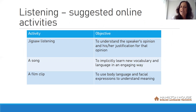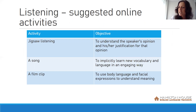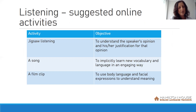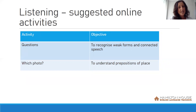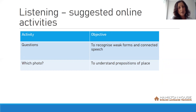Here are some suggested online listening activities. Jigsaw listening: objective — to understand the speaker's opinion and justification. A song: objective — to implicitly learn new vocabulary and language in an engaging way. A film clip: objective — to use body language and facial expressions to understand meaning. Questions: objective — to recognise weak forms and connected speech. Which photo: objective — to understand prepositions of place.